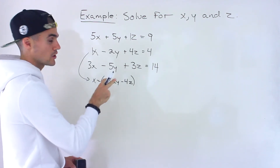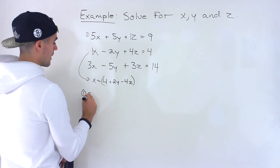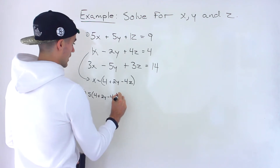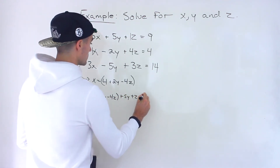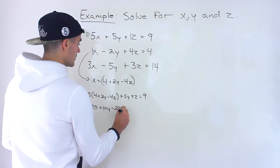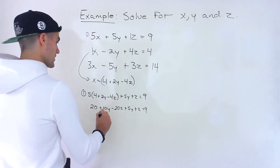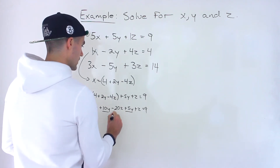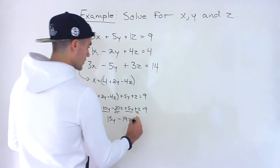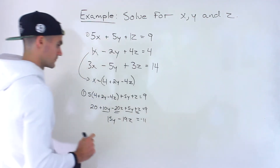I'm going to take that expression for x and plug it in for x in the other two equations, giving us two equations with two unknowns in terms of y and z. Starting with equation one: 5 times (4 plus 2y minus 4z) plus 5y plus z equals 9. That gives us 20 plus 10y minus 20z plus 5y plus z equals 9. Combining like terms: 15y minus 19z equals negative 11.